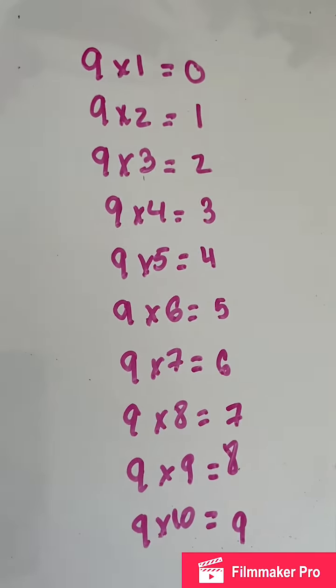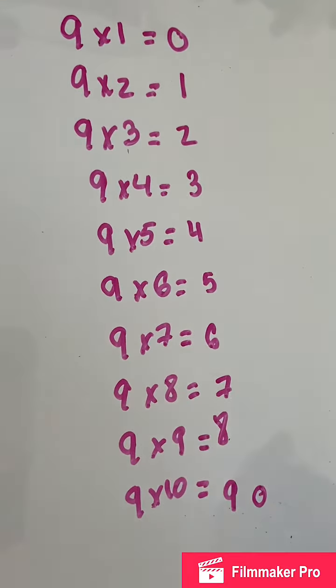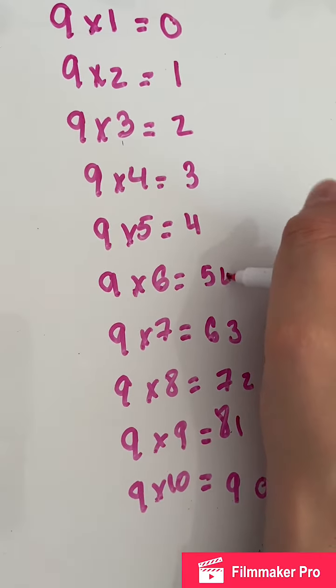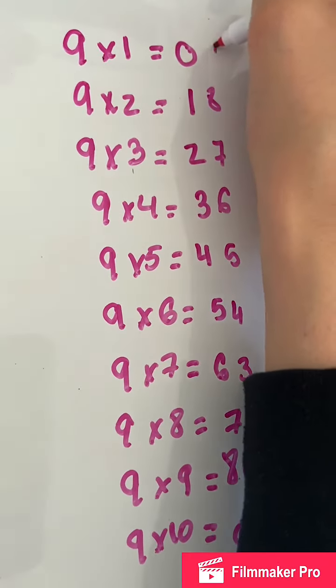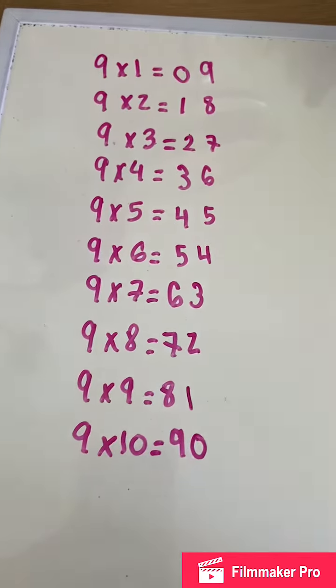Then we're gonna go from the bottom to the top starting off with the number zero. So zero, one, two, three, four, five, six, seven, eight, nine. And these are your answers. These are the answers.